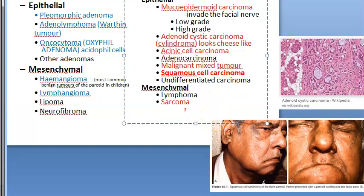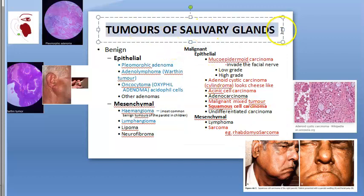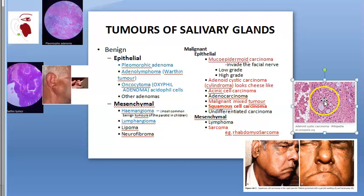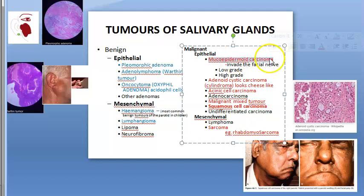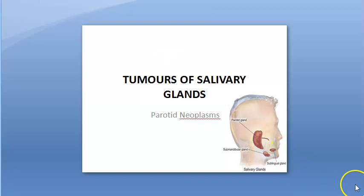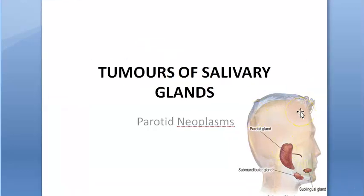For sarcoma under mesenchymal malignant origin, an example is rhabdomyosarcoma, which may arise from the parotid. So these were the tumors of salivary glands. To summarize: pleomorphic adenoma, Warthin's tumor, cylindroma, squamous cell carcinoma, and mucoepidermoid carcinoma are key names. Generally, the patient will present with a lump and facial paralysis.